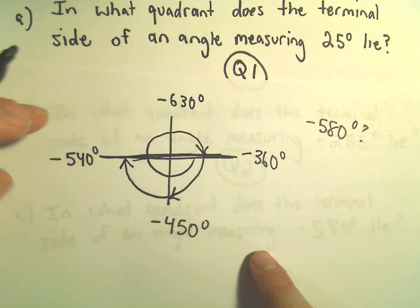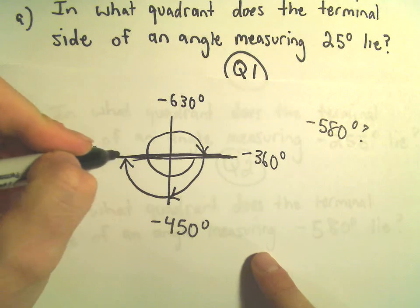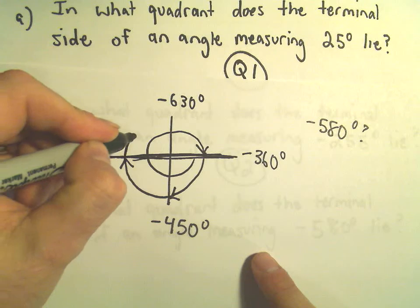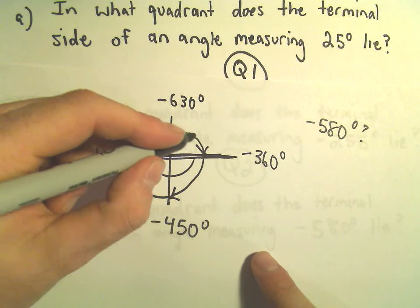So negative 580 is certainly going to be between negative 540 and negative 630. We basically need to go about another 40 degrees. So if you've gone around one full time, another half a time,